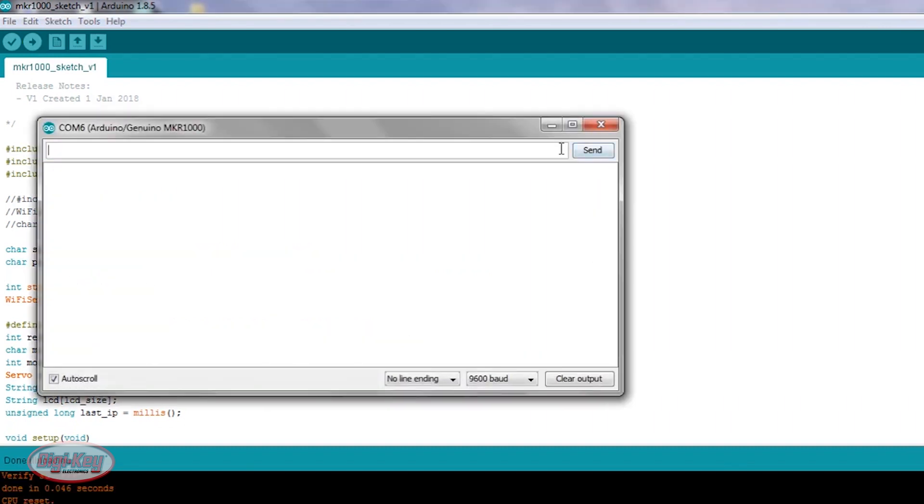Okay, it says done uploading. Let's open this and give it a couple seconds. And it should provide the IP address. Alright, there we go. At this point we're going to need to download the app on the phone.